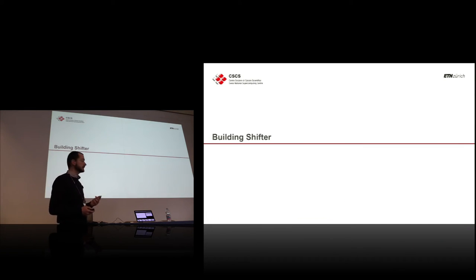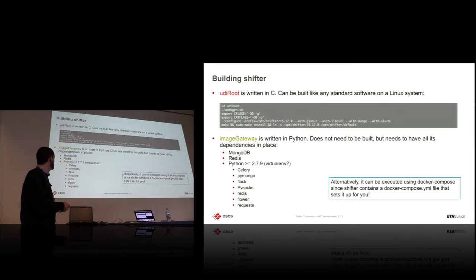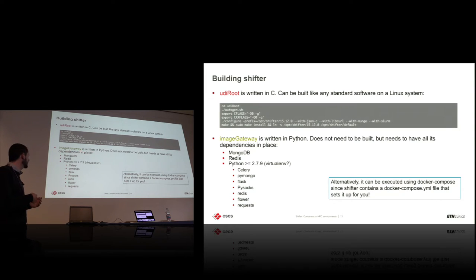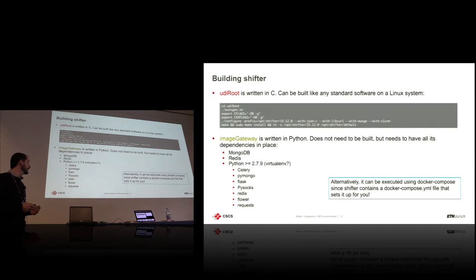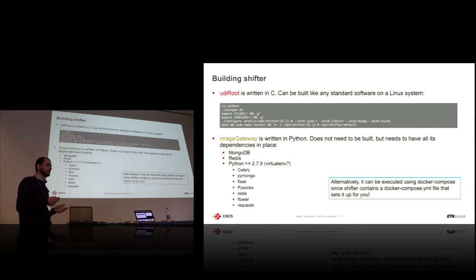Let me quickly cover how to build Shifter, which is a strong point compared to Docker in our environment. Basically two things: UdiRoot is a C program — you just configure, make, and make install. Then some minor configuration changes over the defaults. The image gateway is Python, so it doesn't need to be compiled. If you don't have chroot access on your machine, you can just use Docker Compose for it. This allows you to run Shifter with very few modifications to your systems, provided you can run Docker.